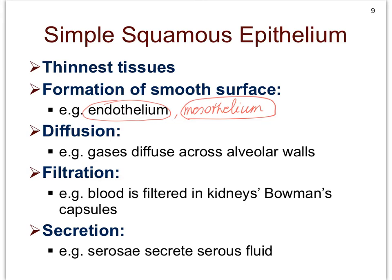We've learned about the serous membranes in the past, and you've learned that in between your visceral and parietal serous membranes there is a cavity filled with watery serous fluid. It is the epithelial cells that are responsible for secreting that serous fluid.